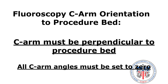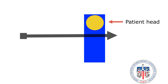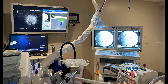Fluoroscopy C-arm orientation: for digital tomosynthesis, the C-arm must be perpendicular to the procedure bed and all C-arm angles must be set to zero. In this schematic, the black arrow represents the 90-degree orientation of the C-arm in relation to the procedure bed and the patient. This image shows the correct position of the C-arm prior to digital tomosynthesis. The C-arm is positioned above the patient in the anterior-posterior position with the lateral oblique angle set to zero. Also ensure that the cephalad-caudad angle is set to zero. A bronchoscope holder is used in this example — not mandatory, but allows for catheter stability and allows the operator to stand further back from the C-arm to improve radiation safety.